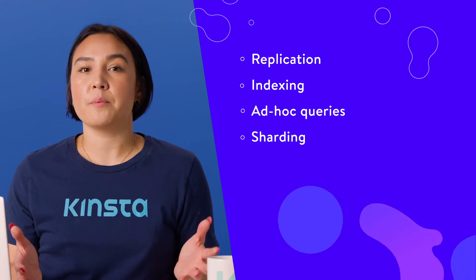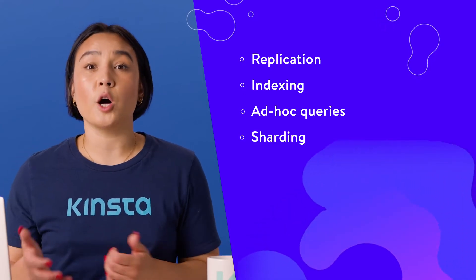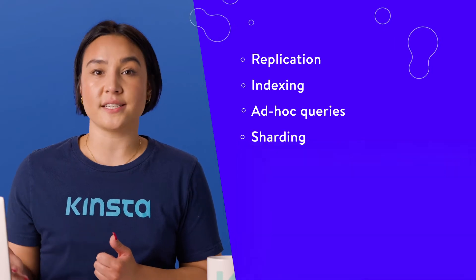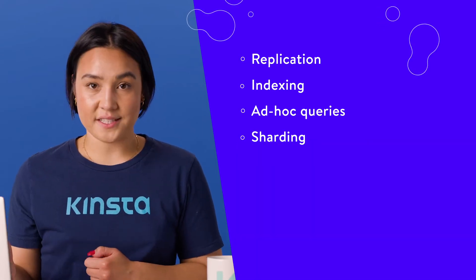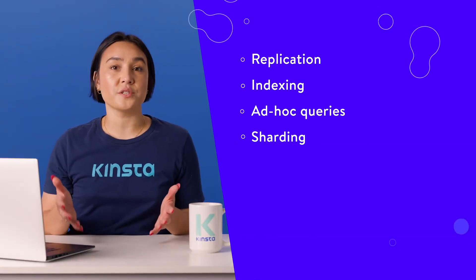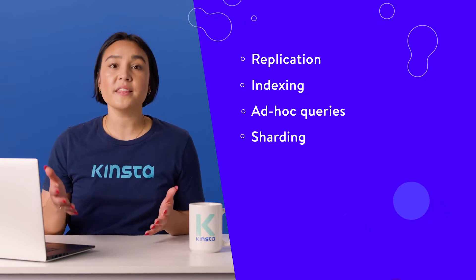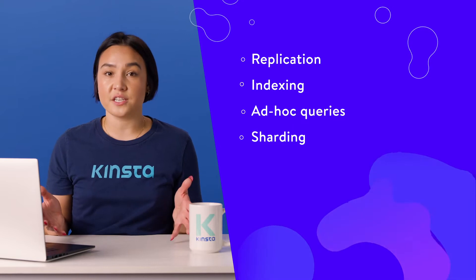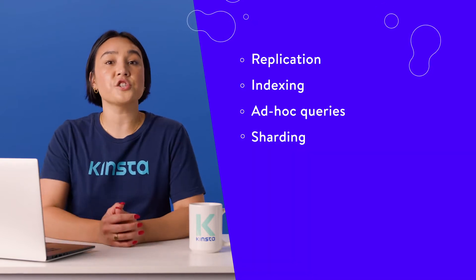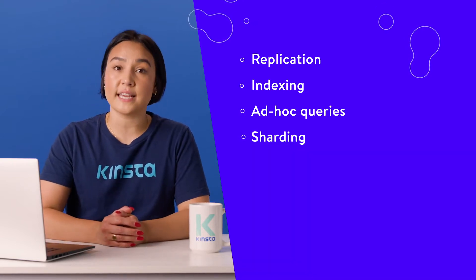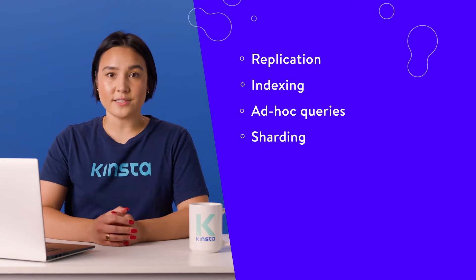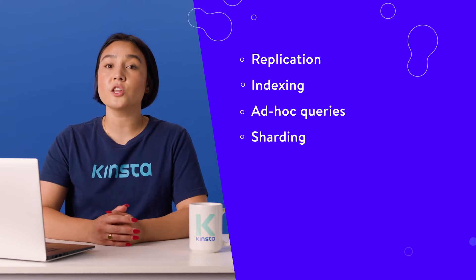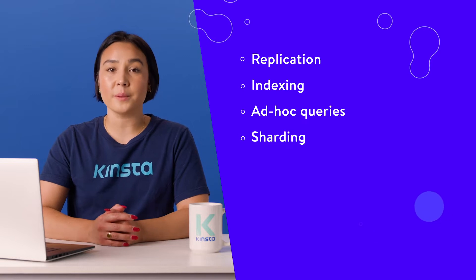Sharding: MongoDB is capable of scaling horizontally with the help of sharding, a method of distributing large data sets across different data collections. Users can choose a shard key to determine the data distribution in a collection and split the data into different ranges across shards. Each shard functions as an individual database, and forming one single database using other shards contributes to load balancing and executes complicated queries.